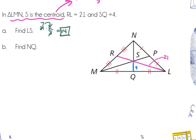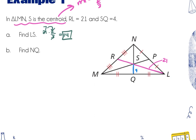Then find NQ. SQ is the one-third part of NQ, not the two-thirds part. So to find the whole thing, multiply by 3: 4 times 3 is 12. You can also see it visually — SQ looks smaller in the diagram. SQ is 4, the two-thirds part NS would be 8, and the whole NQ is 12.